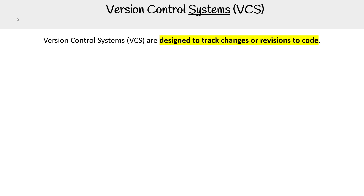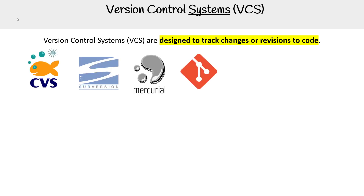Hey, this is Andrew Brown. And we are taking a look at version control systems, which are designed to track changes or revisions to code. There's been a lot of software over the years that helped us do that — we had CVS, Subversion, Mercurial, and Git.